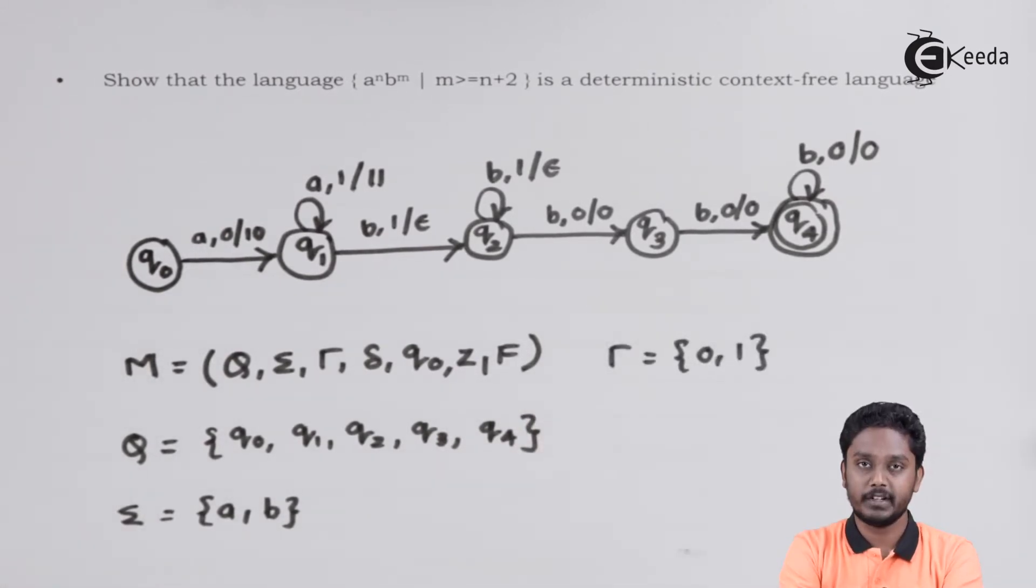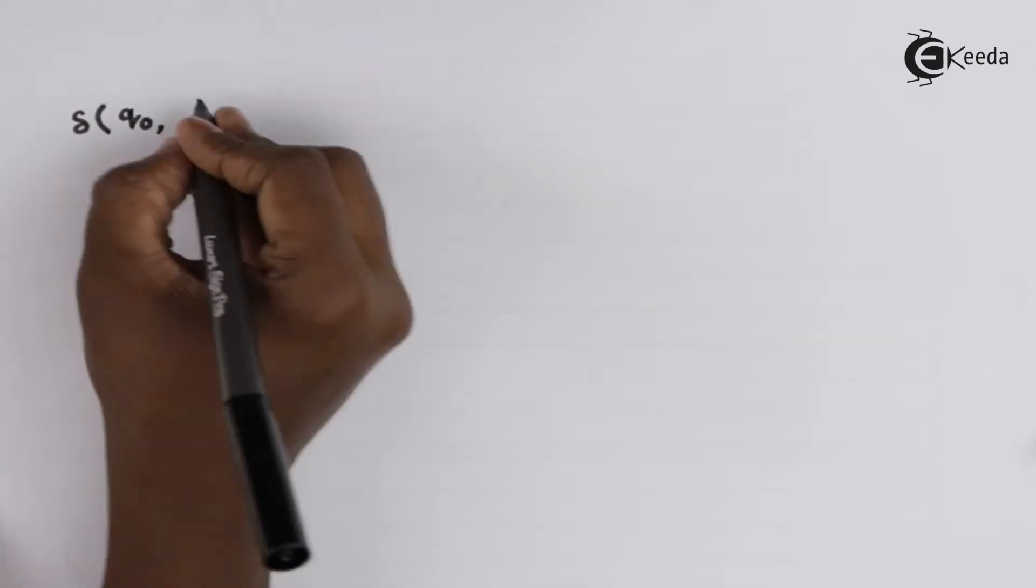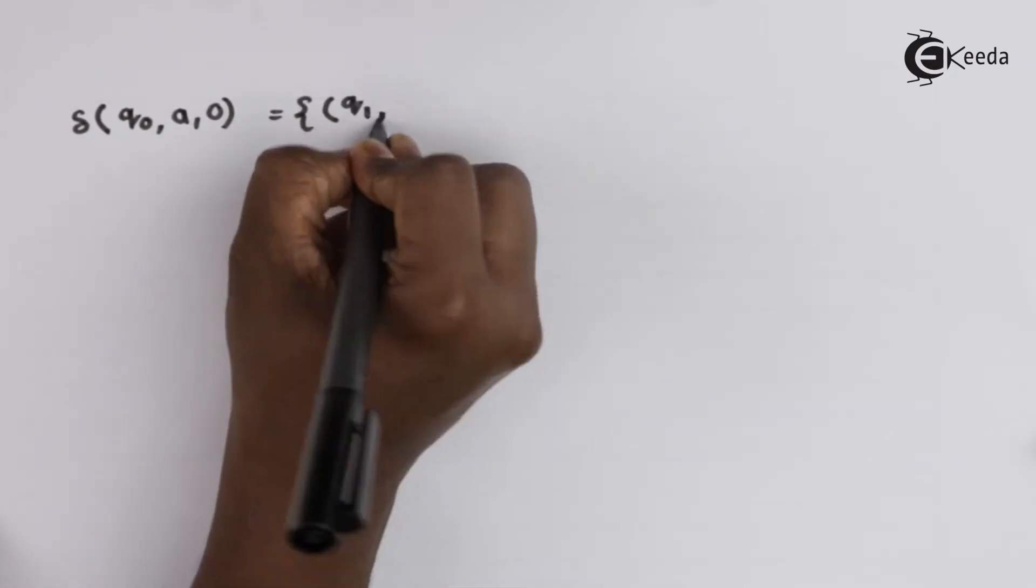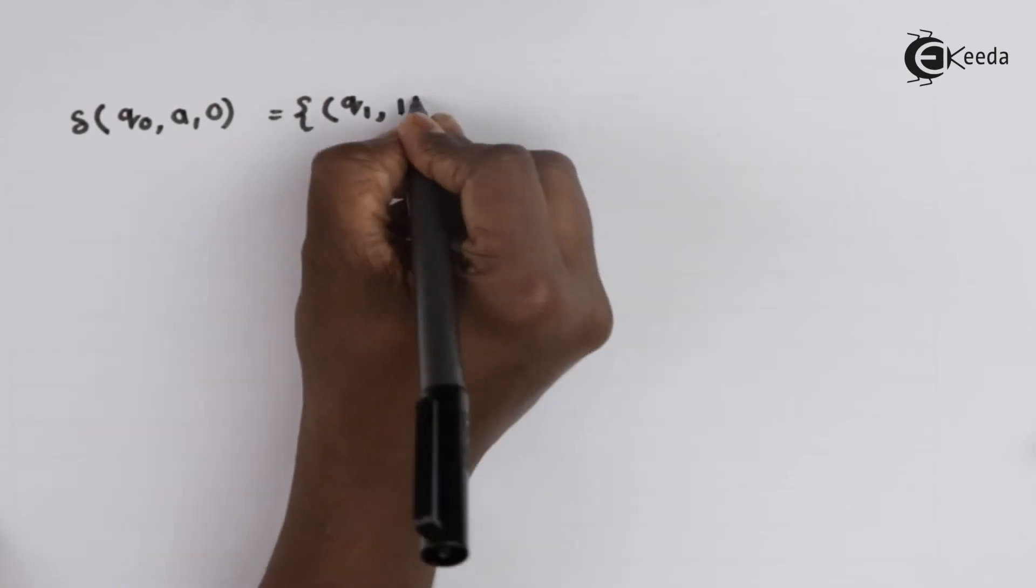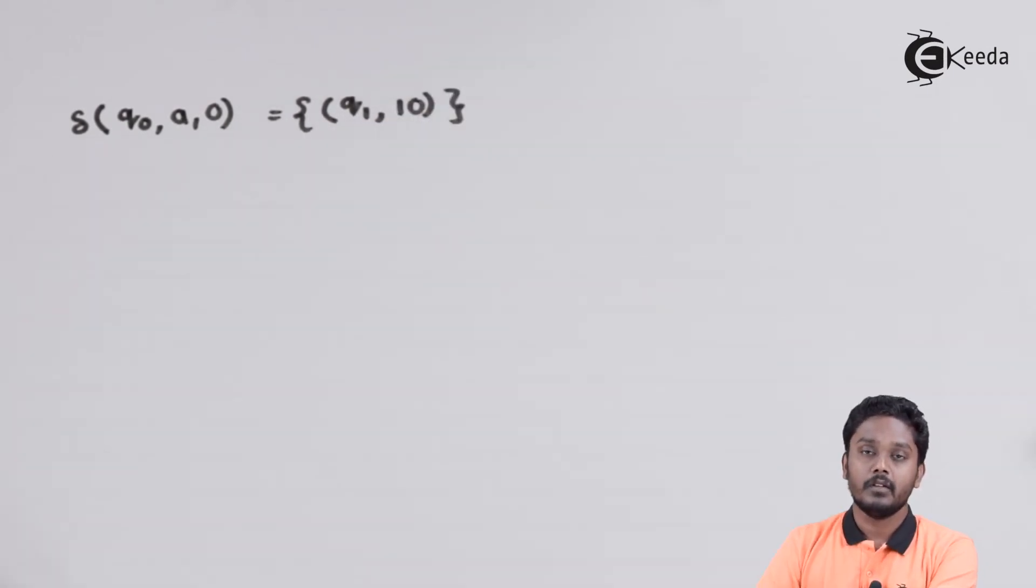Let's write the transition function delta. The first transition is from state Q0 on A as the input symbol and 0 as the top of the stack. We go to state Q1 by pushing a 1 onto the stack.